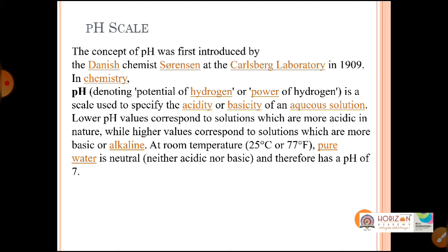Bases are any substance which are able to produce OH⁻ ions in water. According to Arrhenius theory, bases are substances which donate OH⁻ ions in water. Alkalis are bases which are highly soluble in water — not all bases are soluble in water. Such highly soluble bases are called alkalis, for example NaOH and KOH. That's why all alkalis are bases, but all bases are not alkalis.